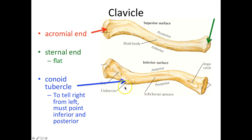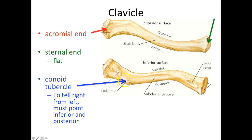The other structure we can see is the conoid tubercle. You might want to start a list of terminology for our bone markings — add tubercle to your list. Tubercle means a sharp bump. This sharp bump enables us to tell a right clavicle from a left clavicle. This clavicle has to be pointed inferiorly and posteriorly, making sure the acromial end is facing laterally and the sternal end is facing medially.